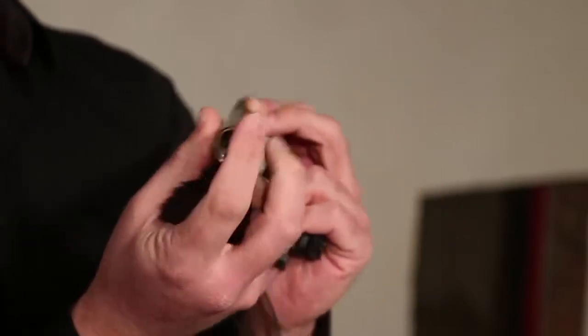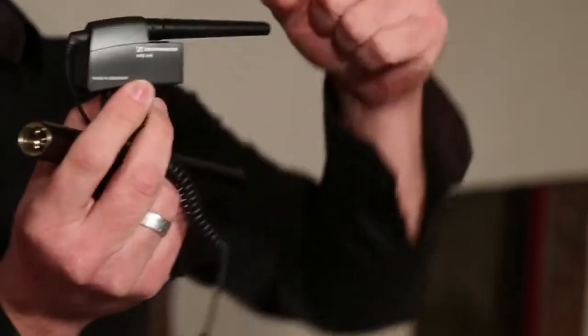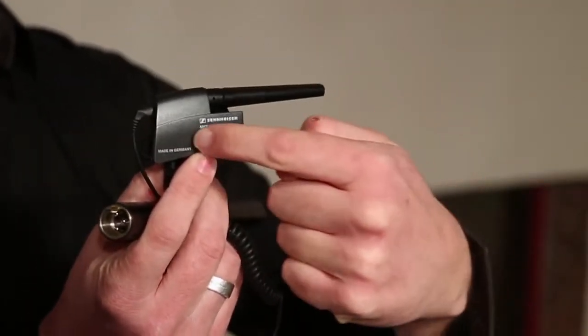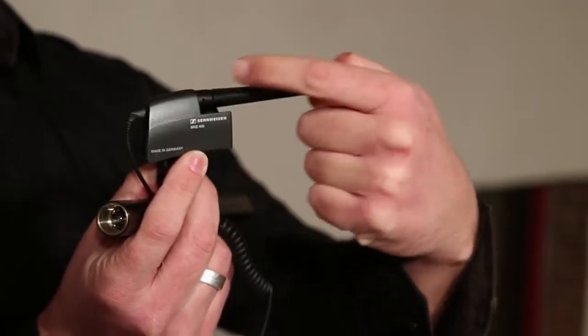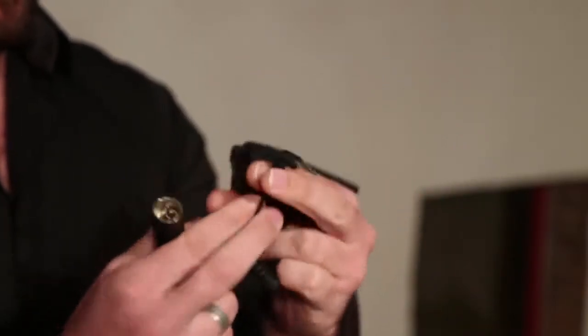And now with the MKE 400, you still have the interference tube and the capsule, but the electronics is folded underneath the capsule and the interference tube. The connector is in the back and it's not XLR, but it's a mini jack.